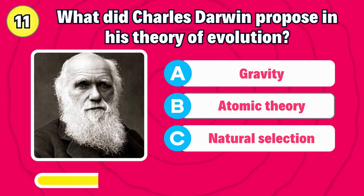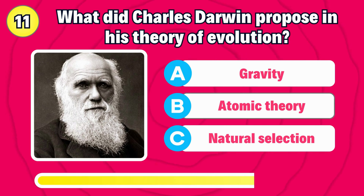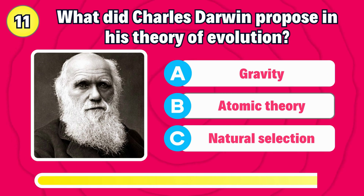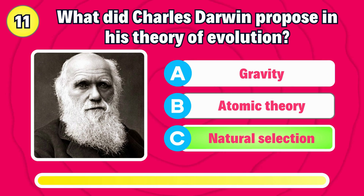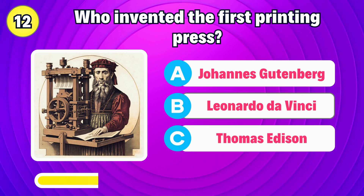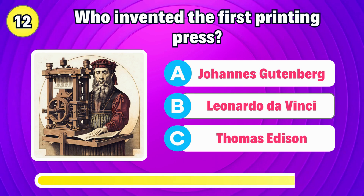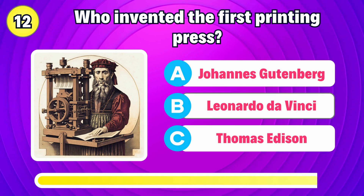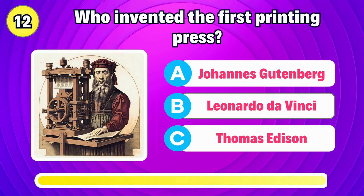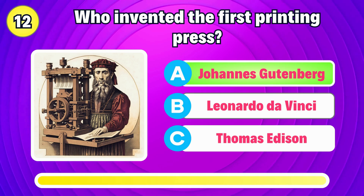What did Charles Darwin propose in his theory of evolution? The correct answer is natural selection. Who invented the first printing press? Right, it's Johannes Gutenberg.